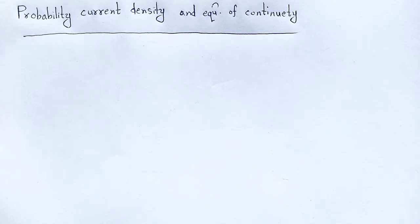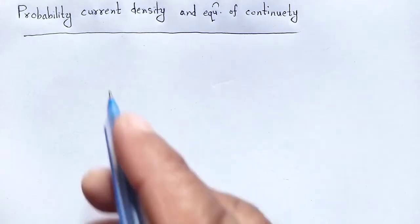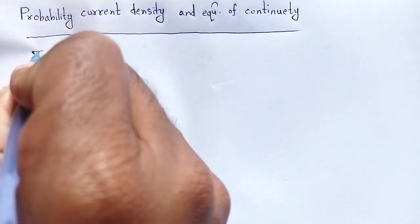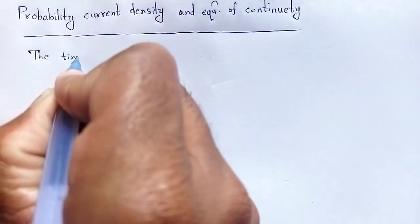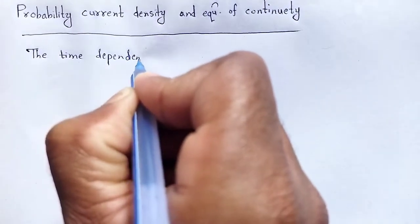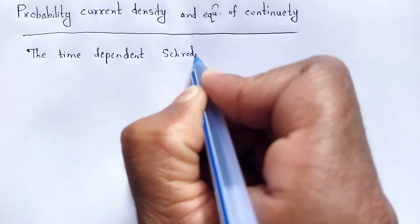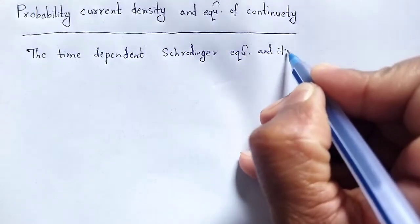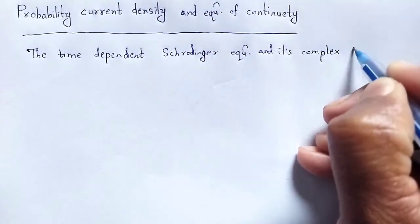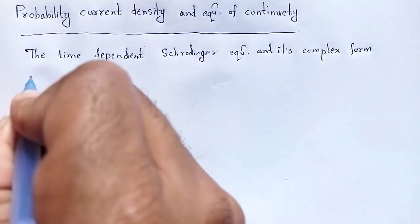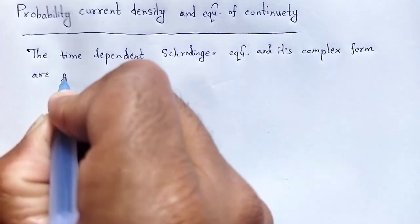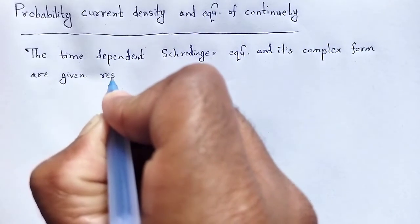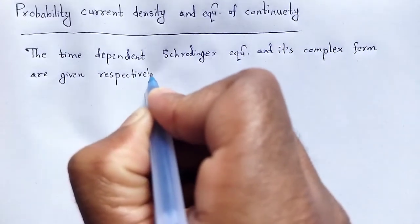The probability interpretation of the wave function psi leads to another important parameter, that is probability current density, which we now discuss. The wave function and its complex form are given respectively.